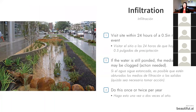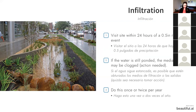So how do you know if your rain garden is working properly? There are a couple of ways to test the infiltration rate to determine if your rain garden is clogged. One way is to visit your site within 24 hours of a half-inch rain event.